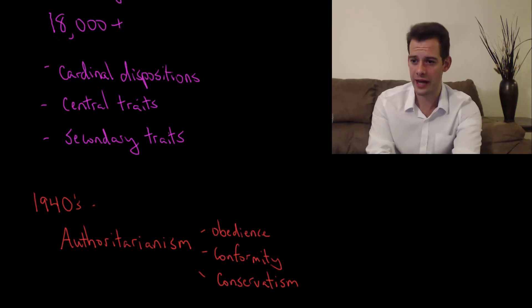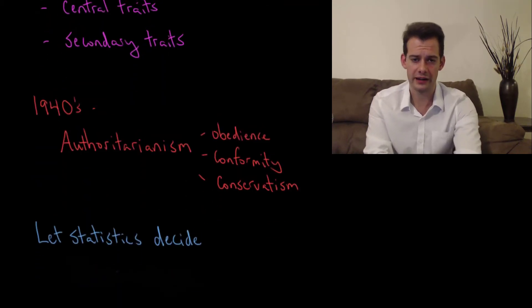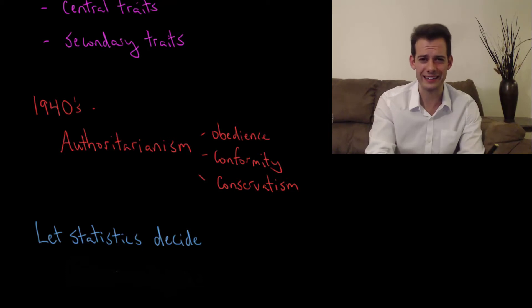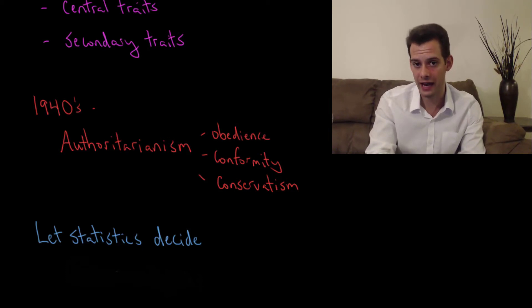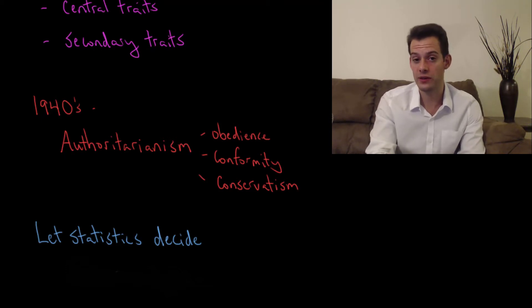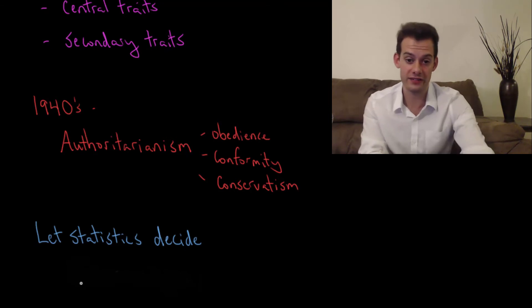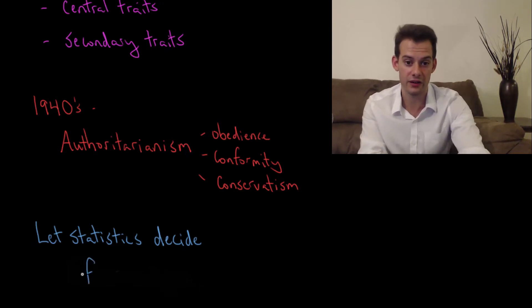One way is that we don't decide — we let the statistics decide. Instead of trying to guess which traits are most important, we simply measure as many traits as we can and then look for correlations between those traits, and that tells us what actually matters, what's most important. This is a technique we saw already when discussing intelligence, called factor analysis.